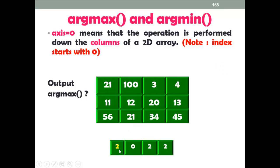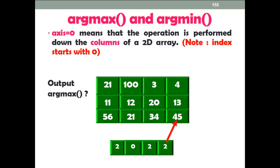We have 4 columns indexed 0, 1, 2, and 3. The first output is 2, because the maximum value is at index 2 of the first column. The remaining outputs follow the same pattern — maximum values at index 2, then 0, then at index 2 of columns 2 and 3 respectively. Remember, axis 0 means the operation is performed down the columns of the 2D array.